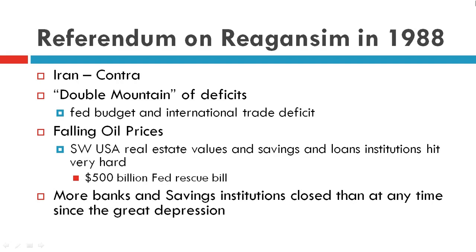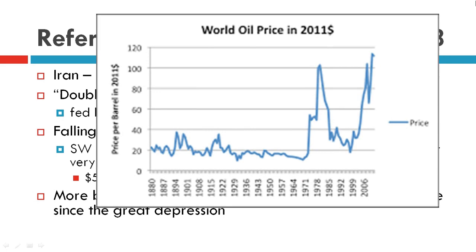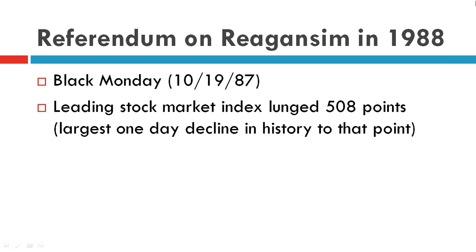More banks and savings institutions had closed than at any time since the Great Depression as a result. Oil prices declined significantly towards the late 1980s and into the 1990s.